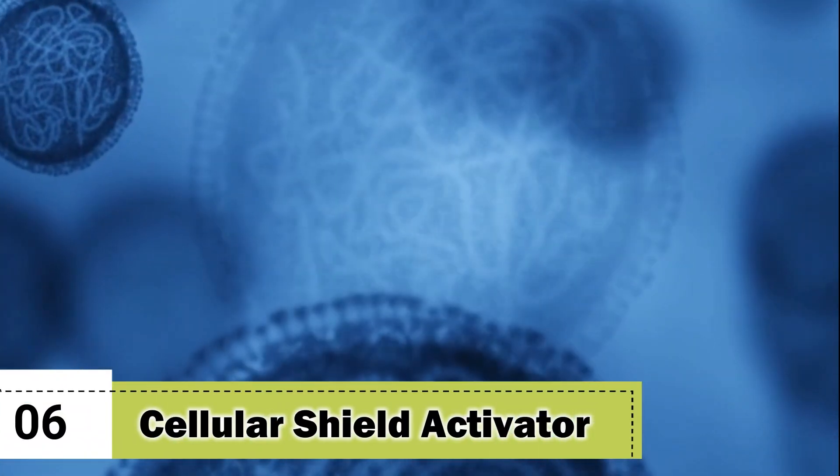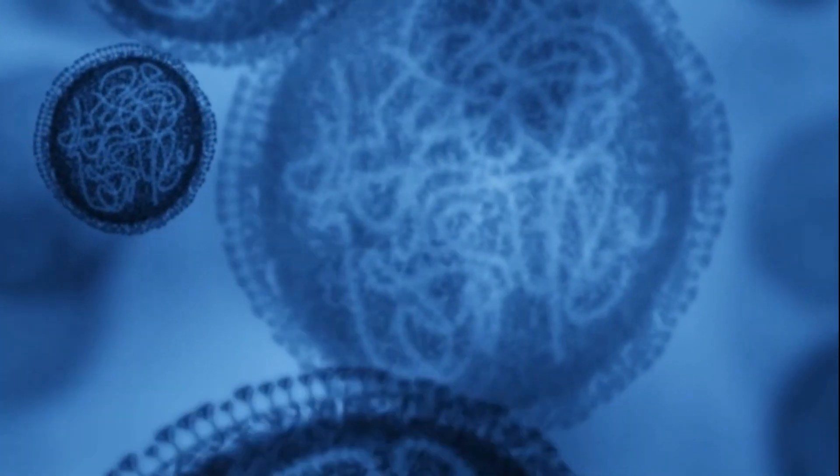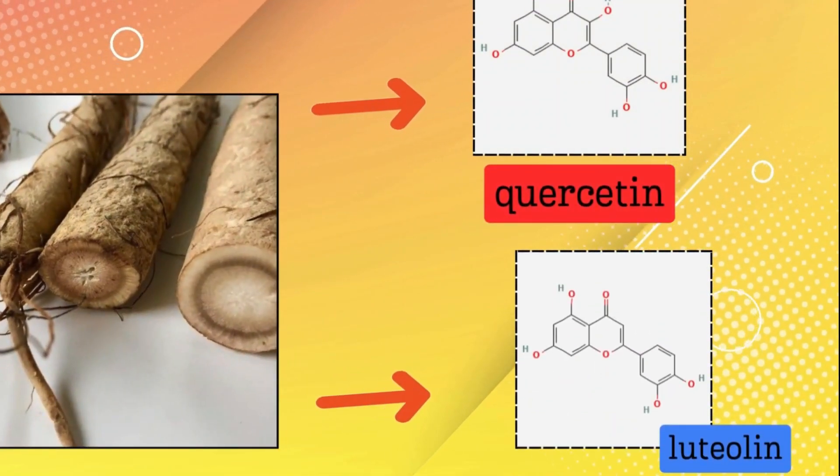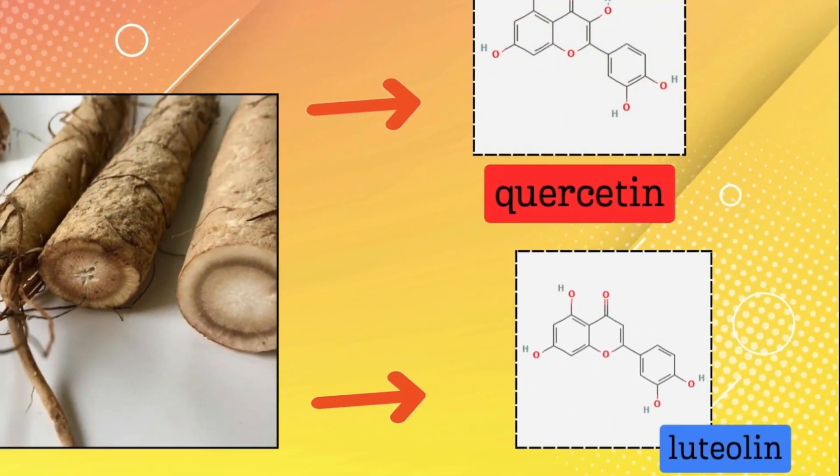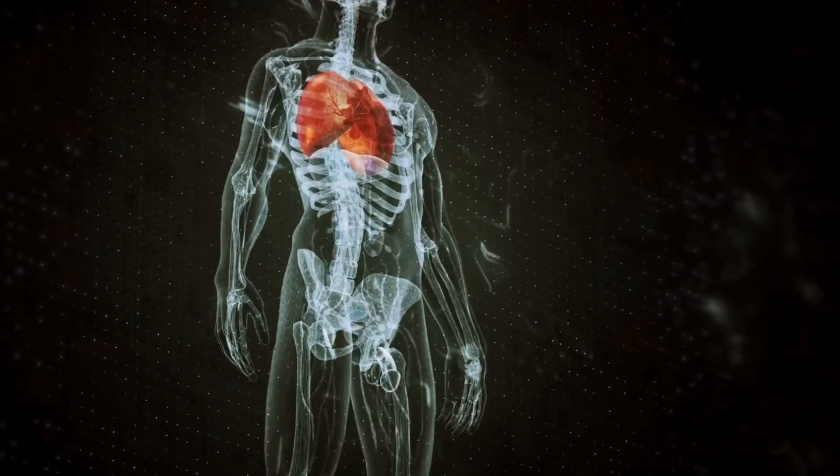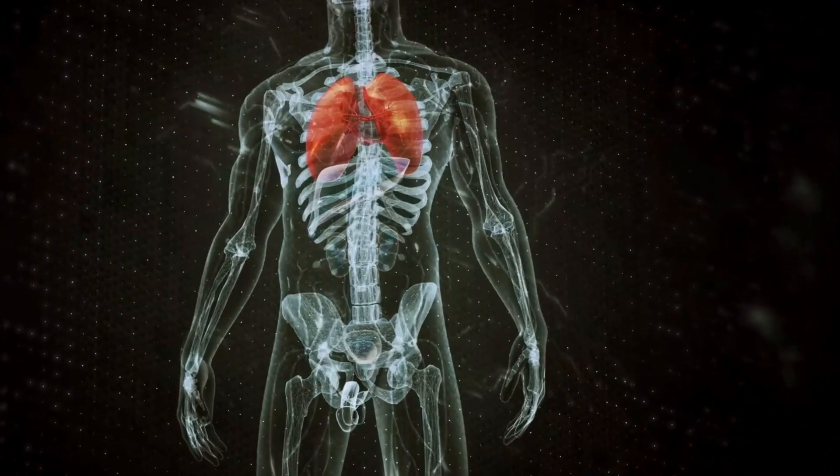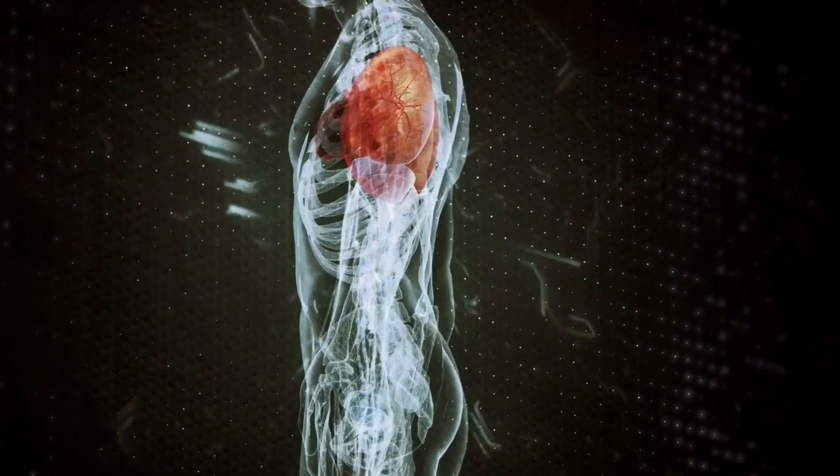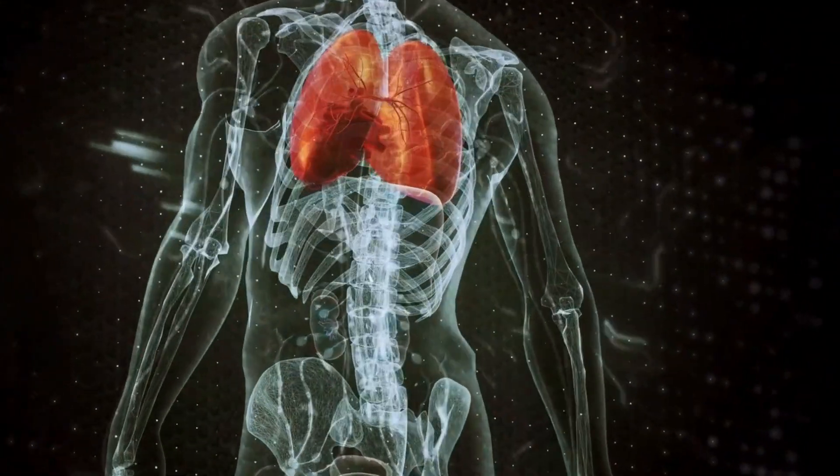6. Cellular Shield Activator. Packed with antioxidants like quercetin and luteolin, burdock root is like a cellular shield against aging and disease. These antioxidants are your body's personal bodyguards, fighting off free radical attackers and keeping your cells youthful and vibrant.